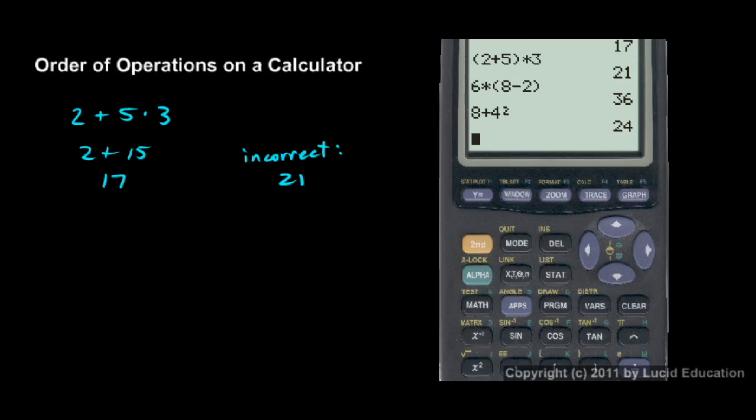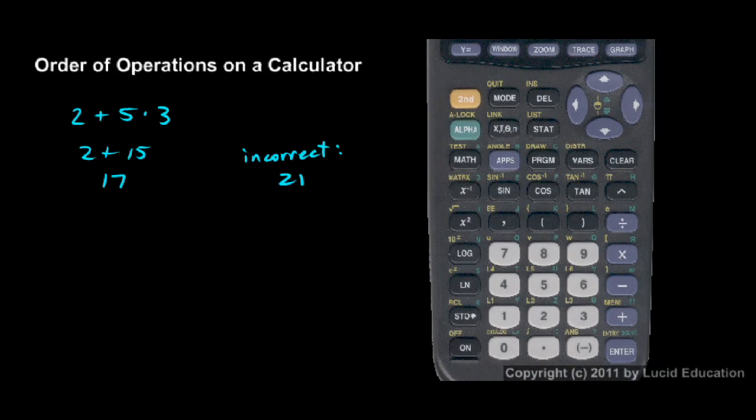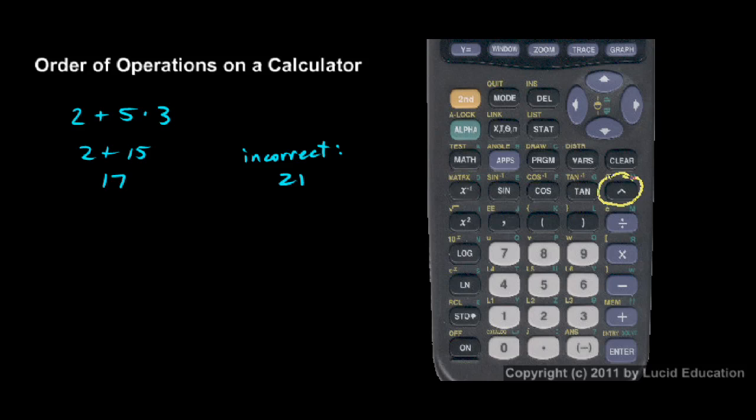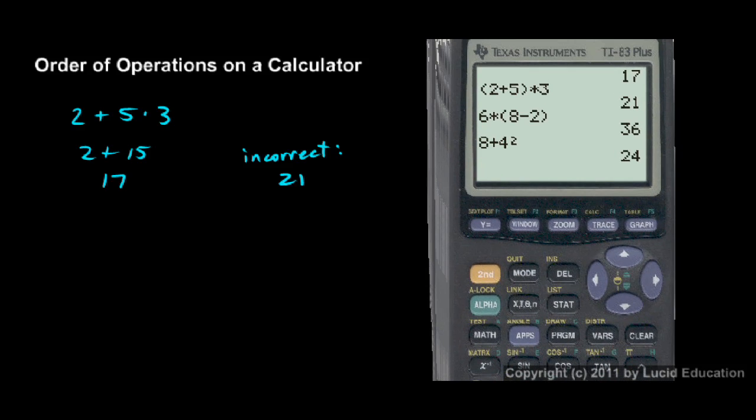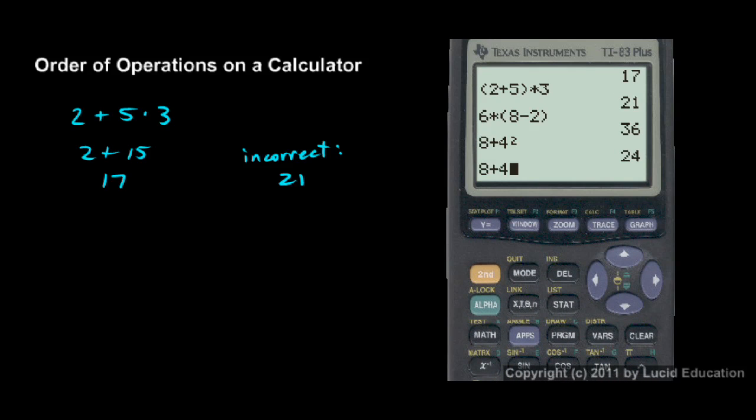I'll show you another way to type in the squared. This little key right here, this little up arrow, or sometimes it's called the caret. It might sit in a different place on your calculator if you have a different model, but that is typically used to mean exponent. If I use that key and I type 8 plus 4 to the power of 2, that means the same thing. This should also give us an answer of 24, and there it is.